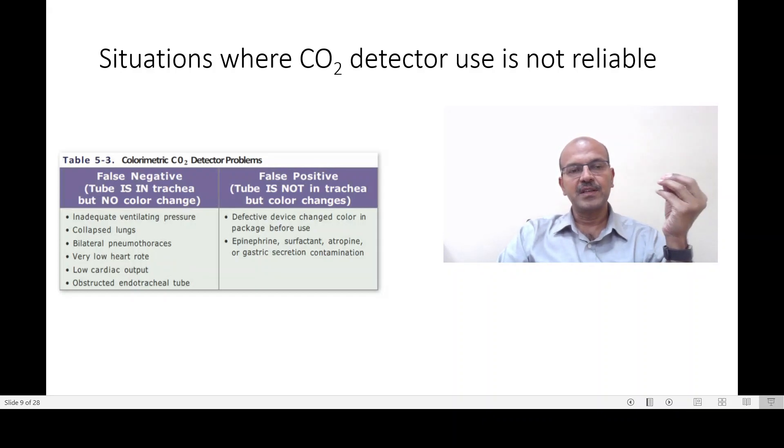...so that means the circulation coming back to the lungs is very less, so the carbon dioxide is not returning out. Any low cardiac output state like a stillborn baby, an obstructed endotracheal tube where the gas is not coming out. In these situations, you will have the tube in the trachea but the color change will not happen, or it may happen slightly and you are in doubt whether it is happening.